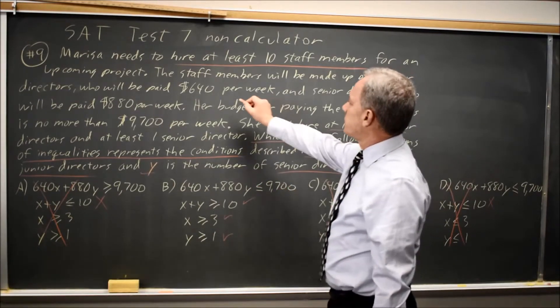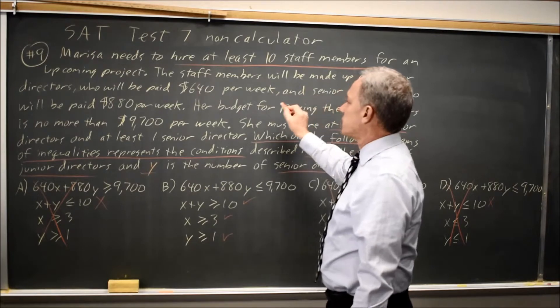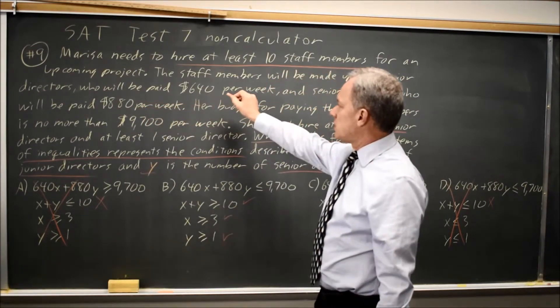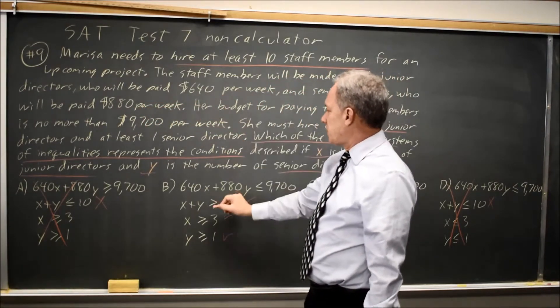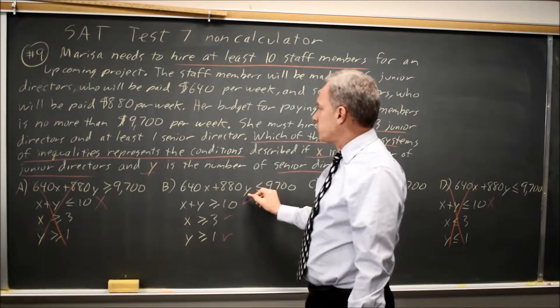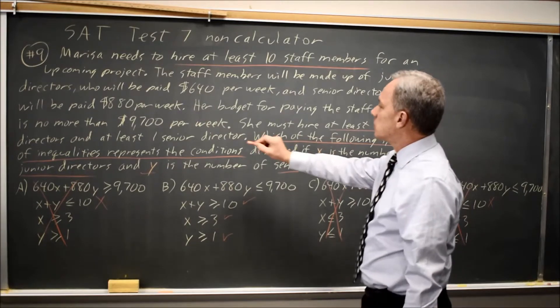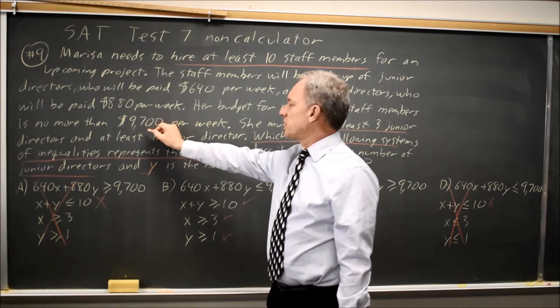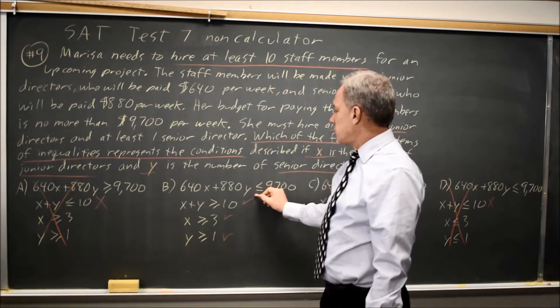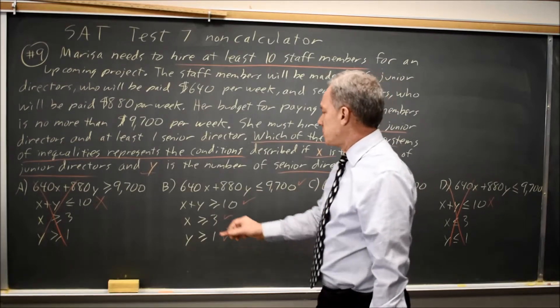Junior directors are paid $640 per week. Senior directors are paid $880 per week. The total cost would be $640X plus $880Y, which is what we have on the left in choice B. And we're told her budget is no more than $9,700 per week. So that would be less than or equal to. So the first equation also matches.